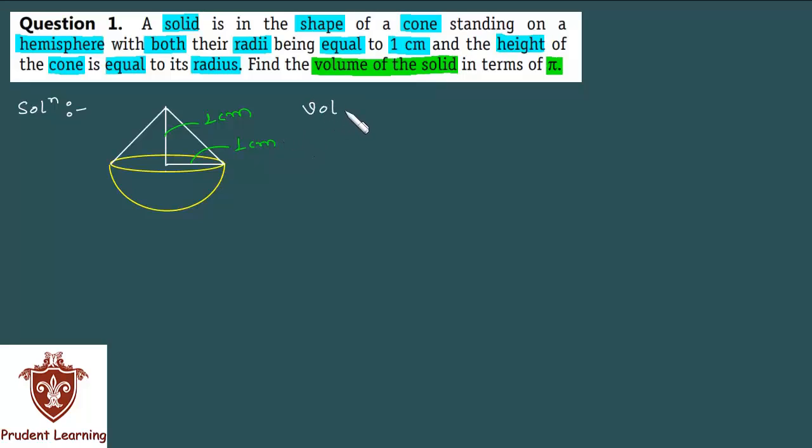Here we have volume of the given solid as volume of hemisphere and volume of cone. Now, we know that volume of hemisphere is given by 2/3 of π r³ and volume of cone is given by 1/3 of π r² h.